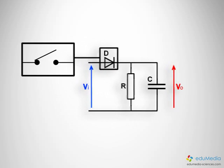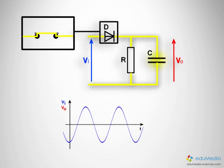The diode acts as a switch. When it is forward biased, the output voltage equals the input voltage and the capacitor takes on charge.